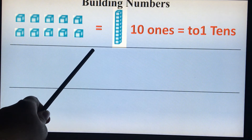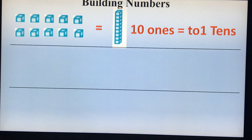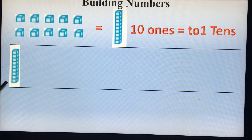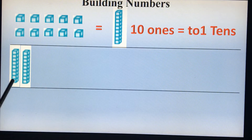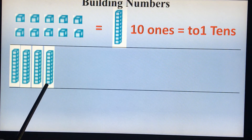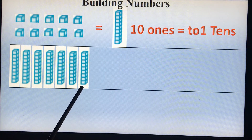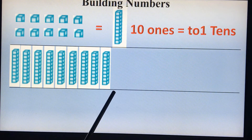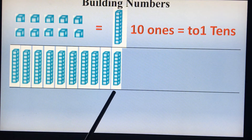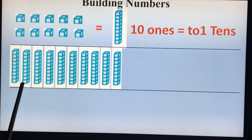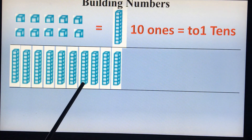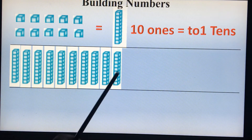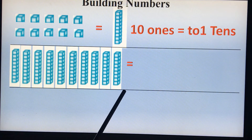Let us move further. I have this tens block. One ten block is ten. Two ten blocks is twenty. Now it is thirty, forty, fifty, sixty, seventy, eighty, ninety. And now when I add ten more to ninety I will be getting the number one hundred. How many ten blocks do I have here? One, two, three, four, five, six, seven, eight, nine — ten blocks. So ten times ten is equal to one hundred.